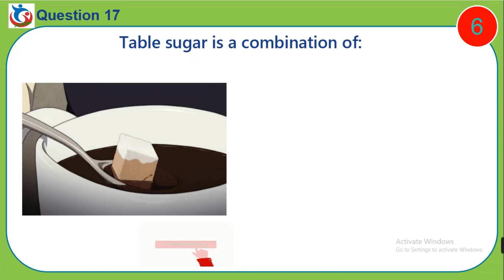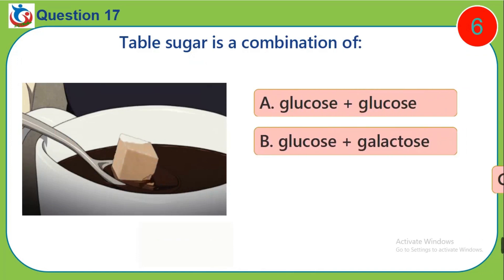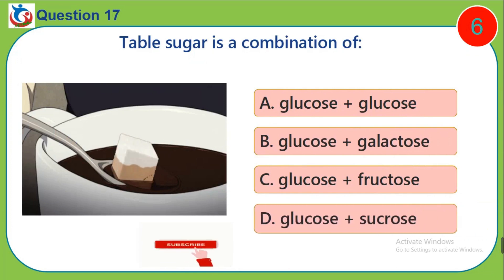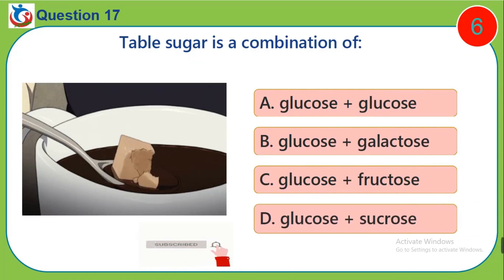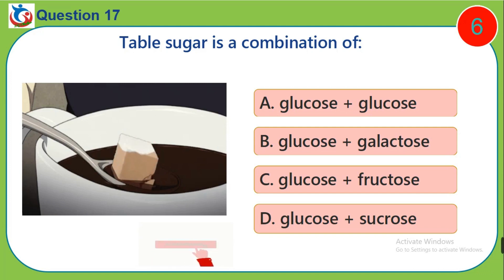Question 17. Table sugar is a combination of: A. Glucose plus glucose, B. Glucose plus galactose, C. Glucose plus fructose, D. Glucose plus sucrose.